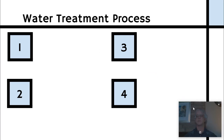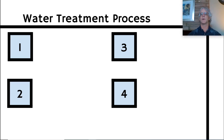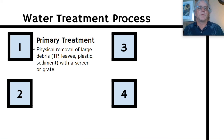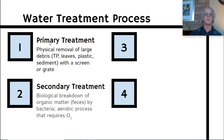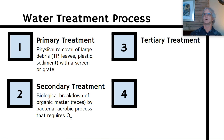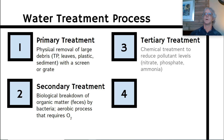There are four stages in a wastewater treatment plant. Stage one is primary, where it physically removes large debris like leaves and plastic with a screen or grate. Secondary treatment is the biological breakdown of organic material like feces or urine by bacteria — it's an aerobic process, therefore it requires oxygen. In tertiary treatment, it's a chemical treatment to reduce pollutant levels such as nitrate, phosphate, or ammonia.